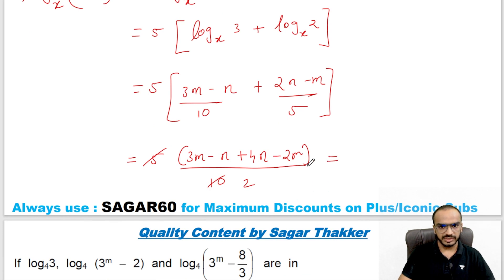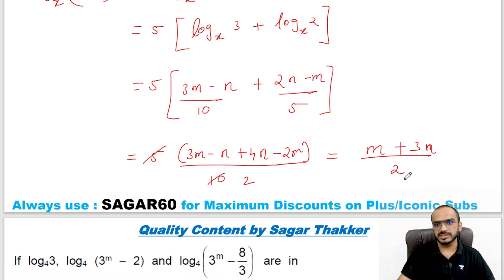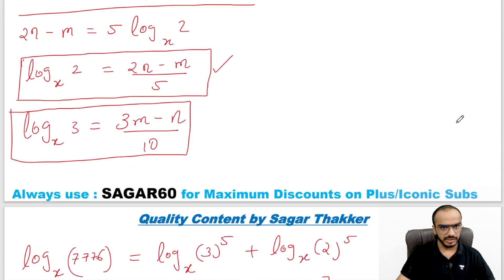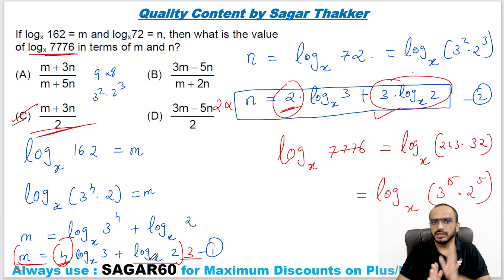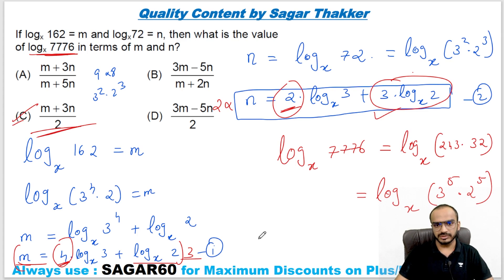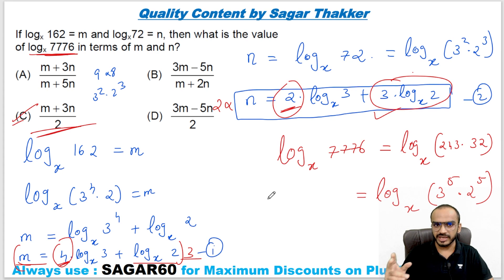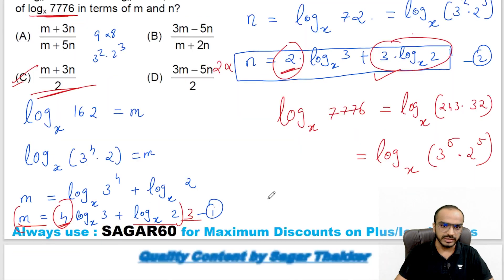Simplifying further: 3m minus 2m gives m, and combining the n terms gives (m + 3n)/2 as the final answer. This is a simple logarithm question — in CAT, logarithm just requires simplification. In recent years CAT has had one to three logarithm questions per year.